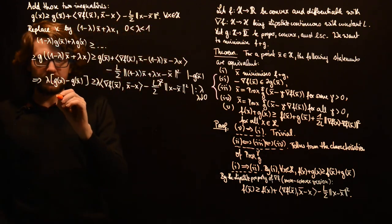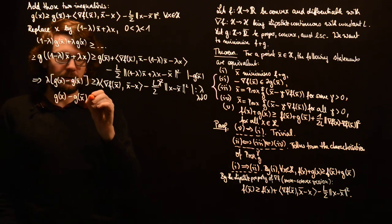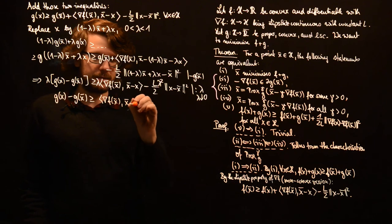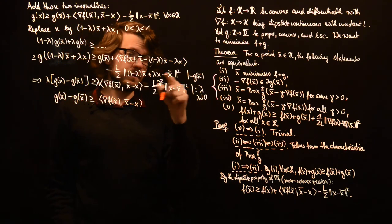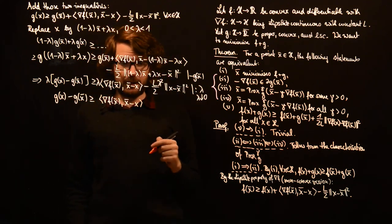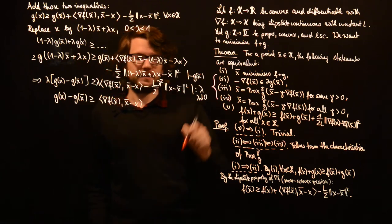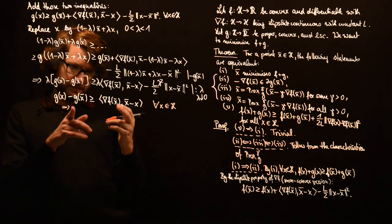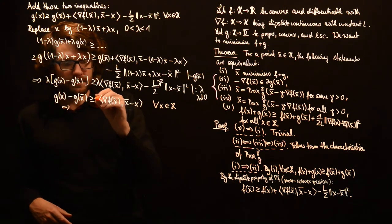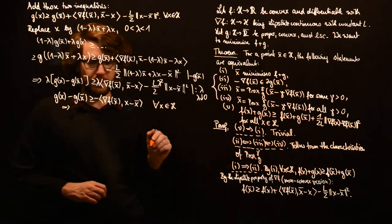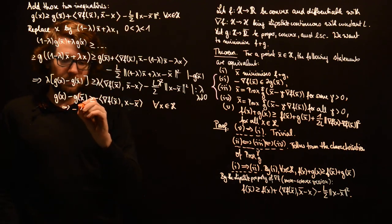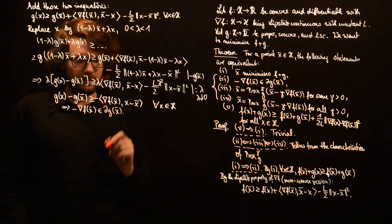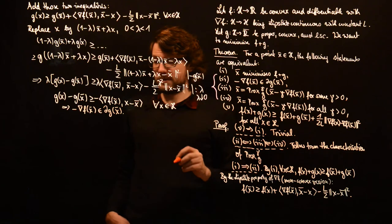Dividing by λ and letting λ → 0, the quadratic term vanishes. We obtain g(x) − g(x̄) ≥ ⟨∇f(x̄), x̄ − x⟩ for all x in H. Flipping x and x̄ in the inner product adds a minus sign, giving exactly that −∇f(x̄) is in the subdifferential of g at x̄ by definition. This shows statement 2.